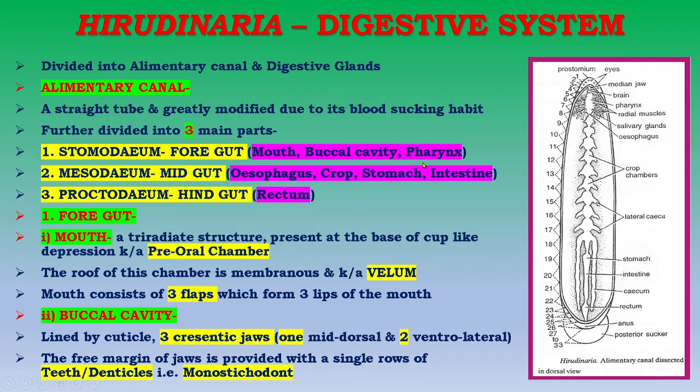Foregut includes the mouth, buccal cavity, and pharynx. The second part is the mesodium or midgut, also known as mesenteron. It includes the esophagus, crop, stomach, and intestine. The third part of the alimentary canal is the proctodium, also known as the hindgut. It includes a single part, that is the rectum.